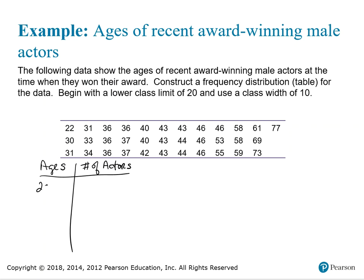The first lower class limit is 20 and the class width is 10, so the lower class limits are 20, 30, 40, 50, 60, and 70. We'll verify we have enough classes as we go. The upper class limit for the first class is 29 — the whole number less than 30. We add the class width to each upper class limit to get the next. Our data is in numerical order and the highest value is 77.